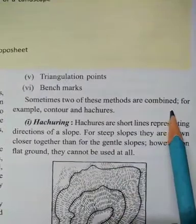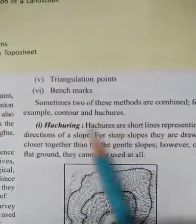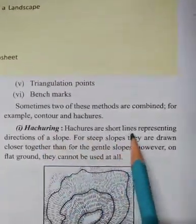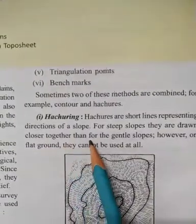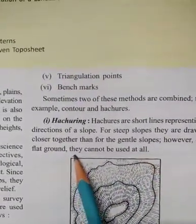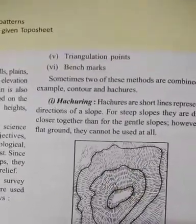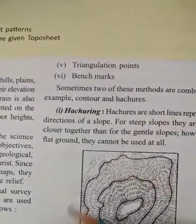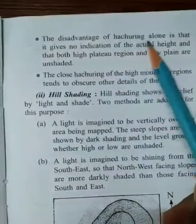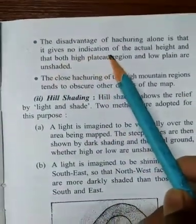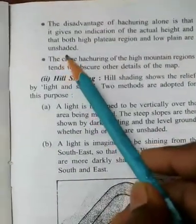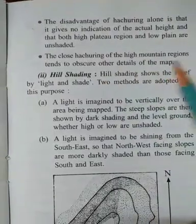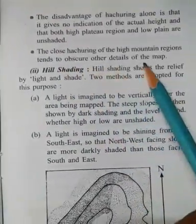Sometimes two of these methods are combined, for example contour and hatches. Hachurings are short lines representing the direction of slope. For steep slopes they are drawn closer together than for gentle slopes; however, on flat ground they cannot be used at all. You can see the hachuring in the image here. The disadvantage of hachuring alone is that it gives no indication of actual height, and both high plateau regions and low plains are unshaded. Also, the close hachurings of high mountain regions tend to obscure other details of the map.